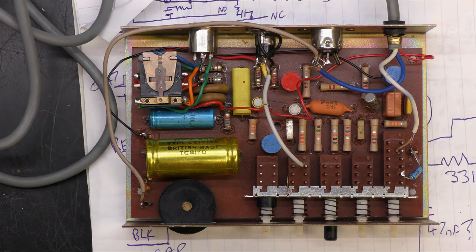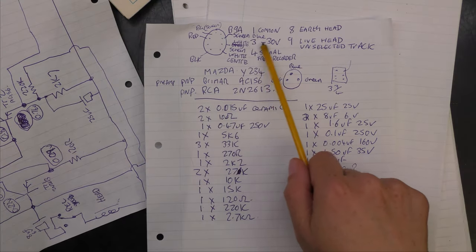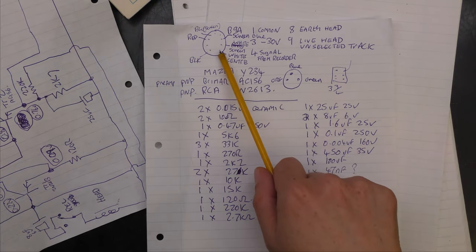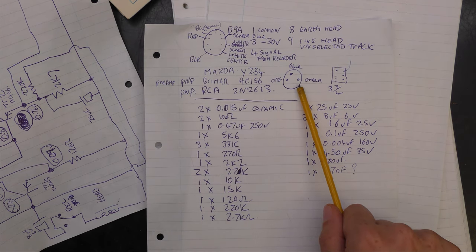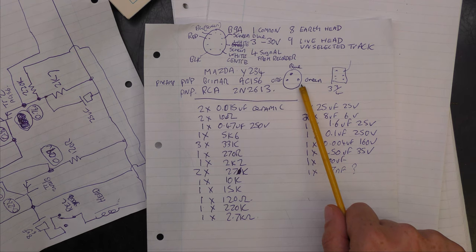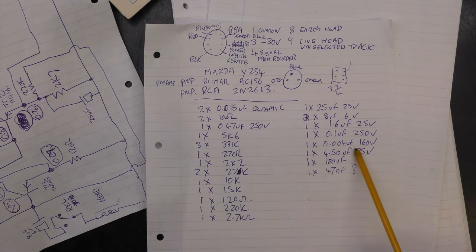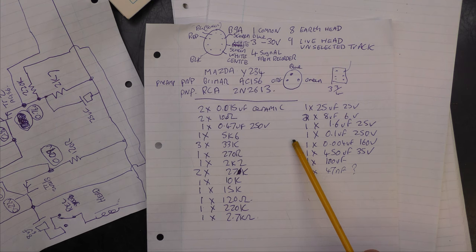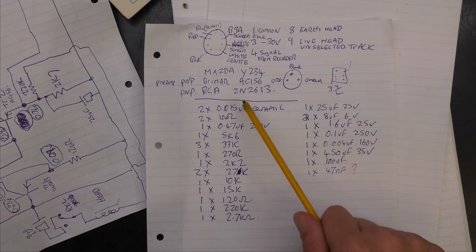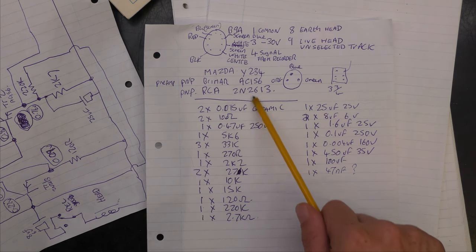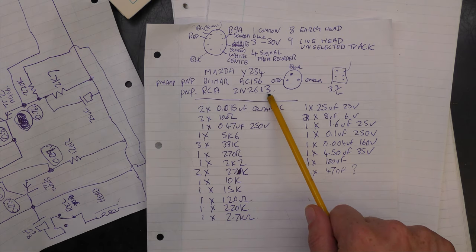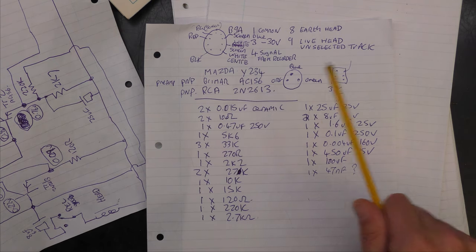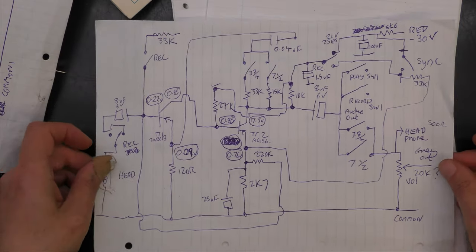So I've just made some notes on the connections to the socket to the tape recorder, notes about the transistors and notes on the connections for the slide projector and a quick list of components which may or may not be complete. It's interesting about the transistors used, I'm assuming that the 2N2613 is probably a lower noise device because it's the first transistor in the preamp.